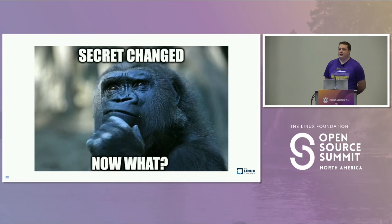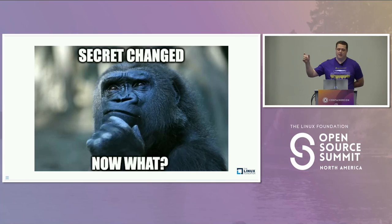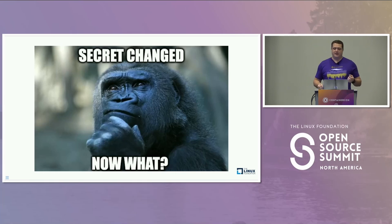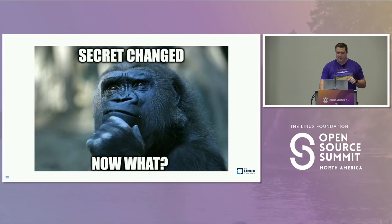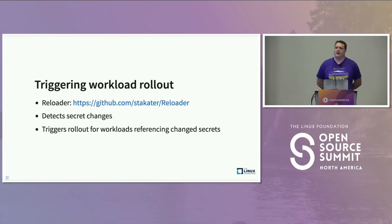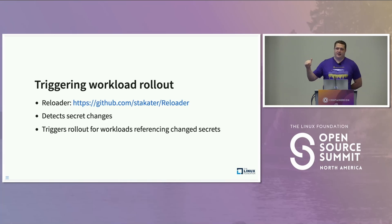So I deployed the secret in the cluster, the application is running, and something changes. ESO can actually synchronize changes — you can specify an interval for the operator to check secrets. So now what? If you mount the secret as a file into your pod, your application needs to take care of reloading that file. But if you inject the secret as environment variables, you can't really do that on the application level. So what you need to do is actually trigger a new rollout. Reloader is a relatively new component that can manage triggering standard workload rollouts when any of the Kubernetes secrets referenced in those workloads change.